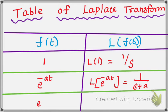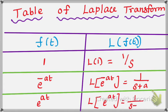L of e power plus a t, that is L of e power a t, is equal to 1 by s minus a. We already proved all the details. All the functions — I give all the details in the description box.